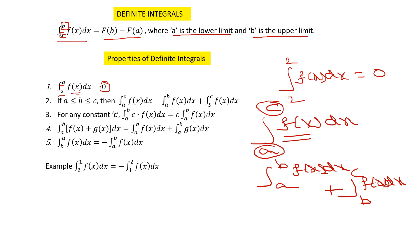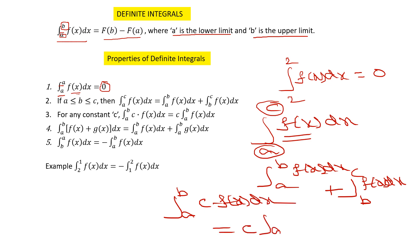Property number three: for any constant c, the integral from a to b of a constant times a function — before integrating, take the constant outside, then write the remaining integral from a to b of f(x) dx.